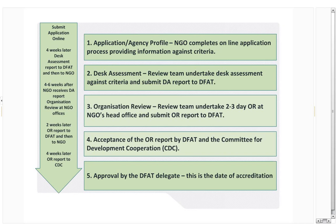On your screen you will see a rough overview of the process and timeframes. Accreditation can be a long and complex process for both NGO and DFAT, so there are a number of steps we need to go through. The first stage is submitting your application — your agency profile — online through SmartyGrants. Once submitted, DFAT will review it to ensure it is eligible and has been completed correctly before sending it to a review team. DFAT contracts an independent review team to undertake the accreditation reviews, consisting of two development specialists and a financial assessor. The review team will then complete a desk assessment, which can take up to four weeks.